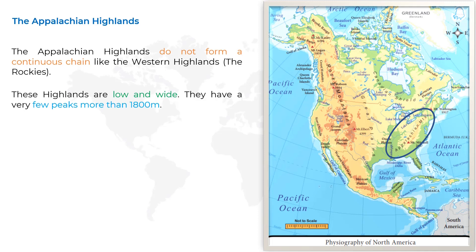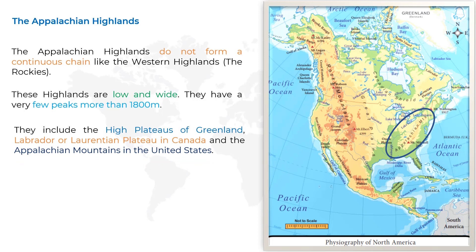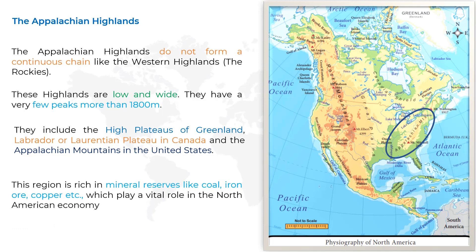The Appalachian Highlands include the high plateaus of Greenland, the Labrador or Laurentian Plateau in Canada, and the Appalachian Mountains in the United States. This region is rich in mineral reserves like coal, iron ore, and copper, which play a vital role in the North American economy.